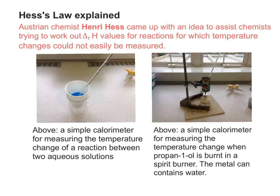So these would be two examples of simple calorimeters where it's easy to measure the temperature change. But obviously not every single reaction is quite so convenient. Some reactions, it's very difficult to measure the temperature change, so you have to use an alternative approach. And that's where Hess's law came in.